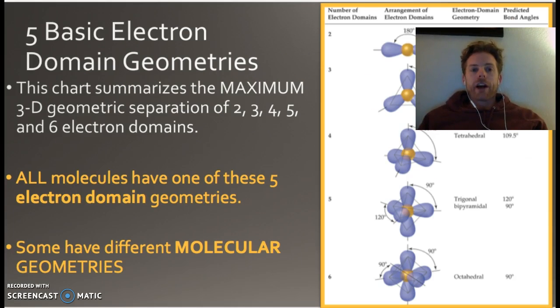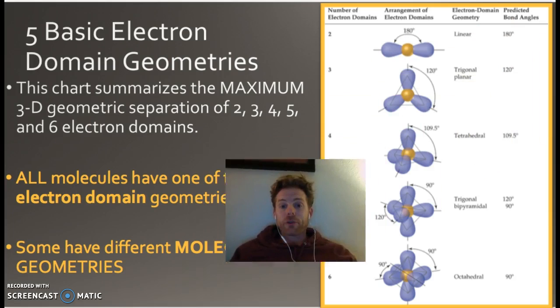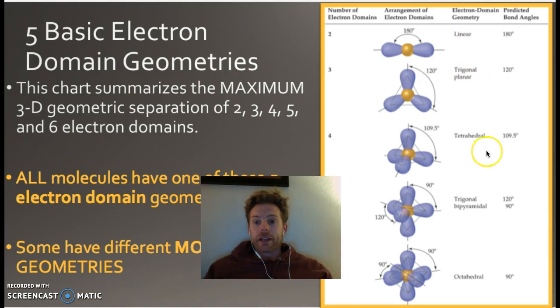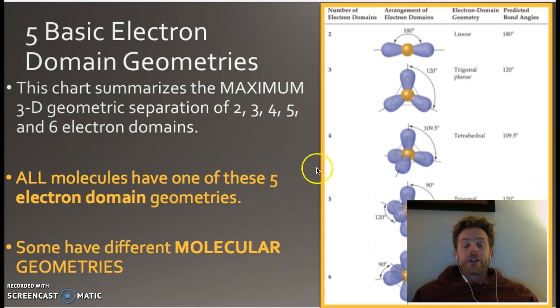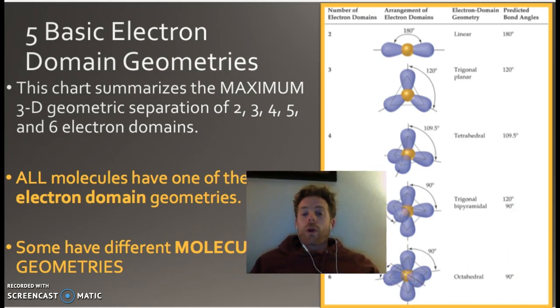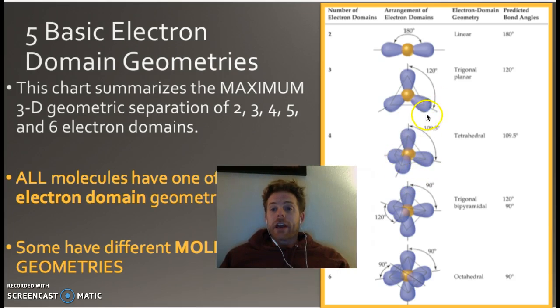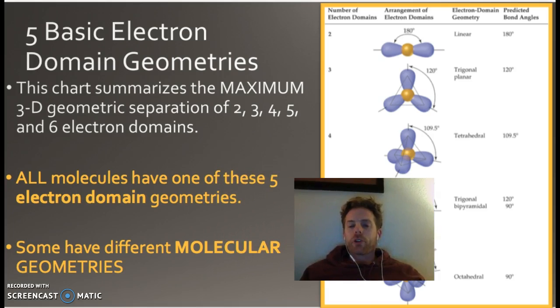Alright, so we have five basic electron domain geometries. These are the ones we've already learned. This includes the linear, the trigonal planar, the tetrahedral, the trigonal bipyramidal, and octahedral. You've learned these, you already know these. It's awesome, they're great. Alright, all of the molecules have one of these five, okay, but sometimes it's a little bit different. And they differ based on what's living, what kind of electrons are in these. Is it going to be all of them are going to be bonds, or are all of them going to be lone electrons, which is like a noble gas, or are they going to be a combination? So we're going to learn about those.